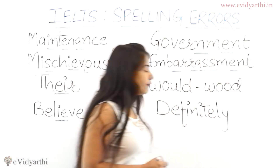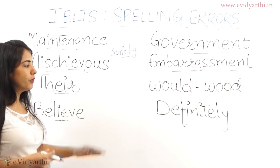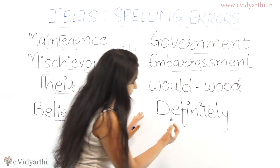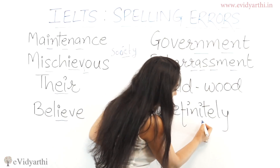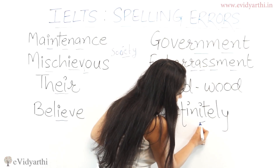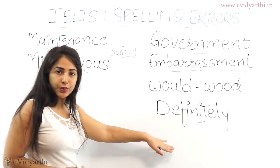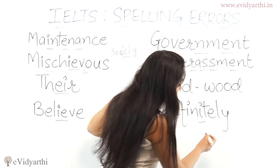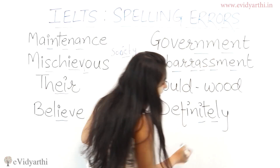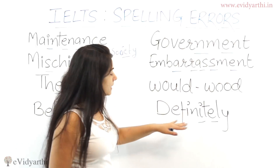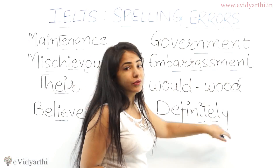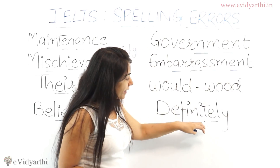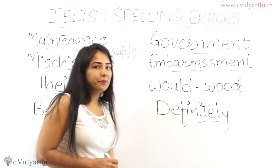Next is 'definitely,' which is a very common word with very common spelling mistakes. The first mistake is that after the 'N,' people use 'A-U' instead of 'I,' which is incorrect. The second mistake is that students forget to write the 'E' after 'T,' writing just '-E-L-Y' instead of '-T-E-L-Y.' The correct spelling is D-E-F-I-N-I-T-E-L-Y.